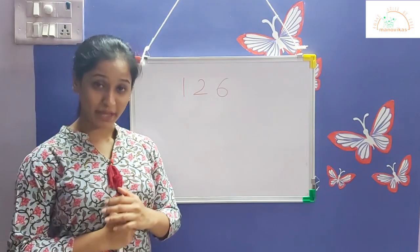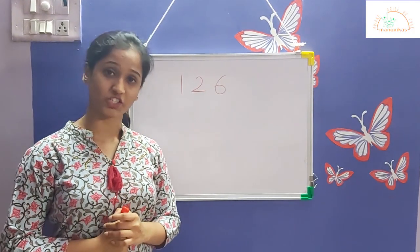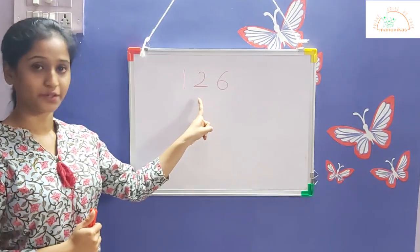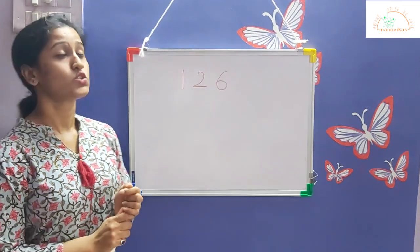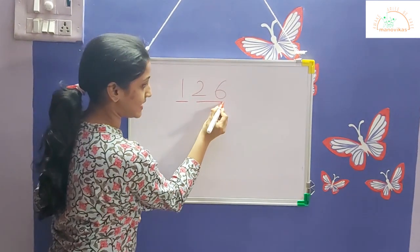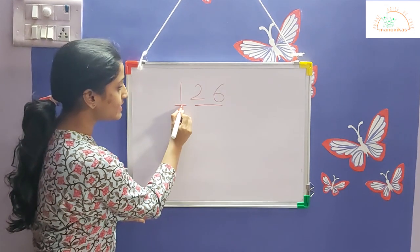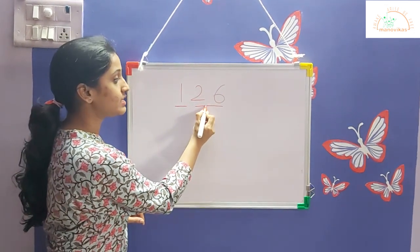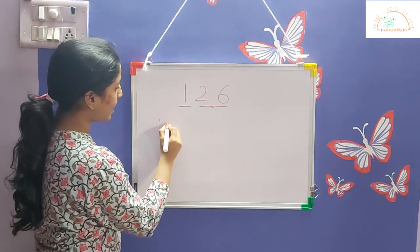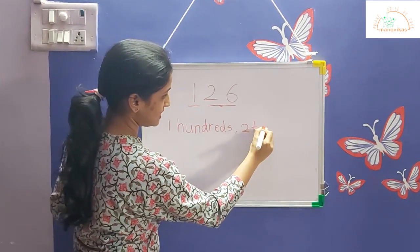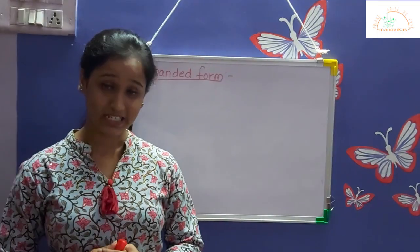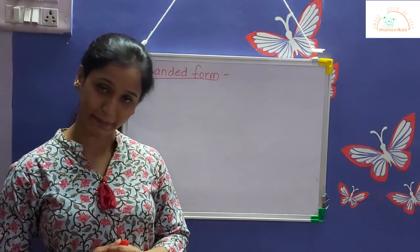Let us move on to the expanded form. Remember, students, always read the hundreds digit first and then read the tens and ones digit together. Here we have the number 126. We say the hundreds number first — this is 100 and 26. So we read the hundreds digit first and then the tens and ones digit together. We write it as 1 hundred, 2 tens, and 6 ones.